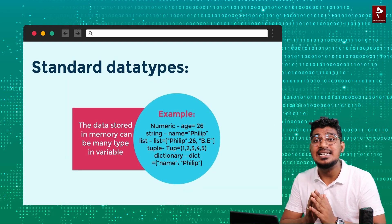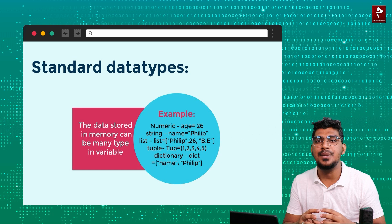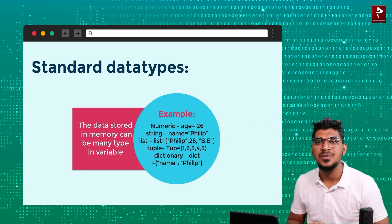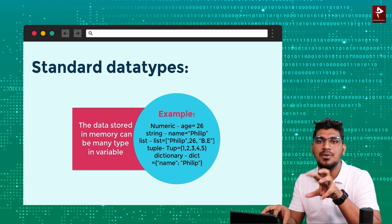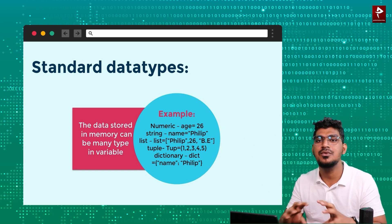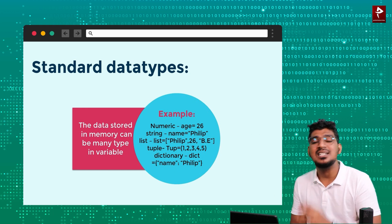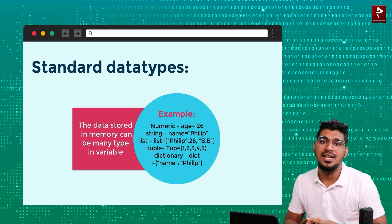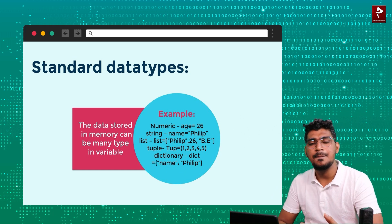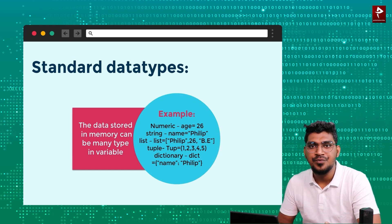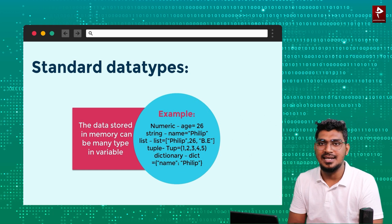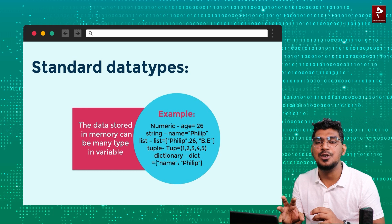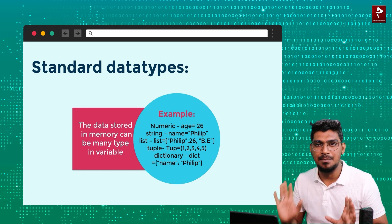So what about standard data types? Normally, if you create a variable, there will be values of one of the data types. The data stored in memory can be many types. For numeric, there is integer data type, float data type, and complex data types. Variables can hold any of these standard data types.